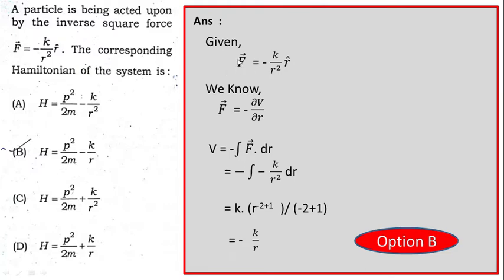Given F vector equal to minus k by r square r cap, we know F, that is the force, is the negative gradient of the potential. So this is minus del V by del R. So V equal to minus integration F dot dr. So you just put the value of F, which is minus k by r square dot dr, and if you do the integration, ultimately you will get minus k by r. So this is the potential energy term. A minus k by r is in option B. So option B is correct.